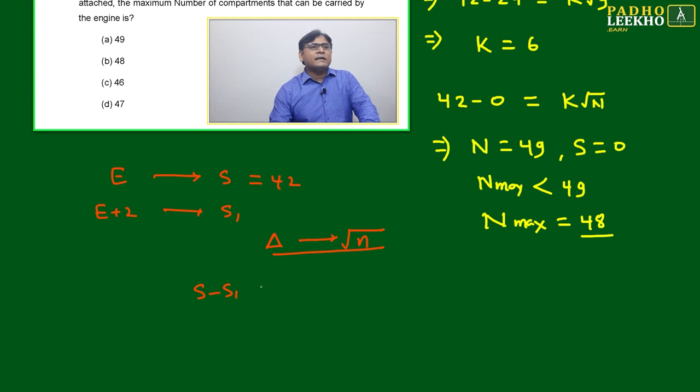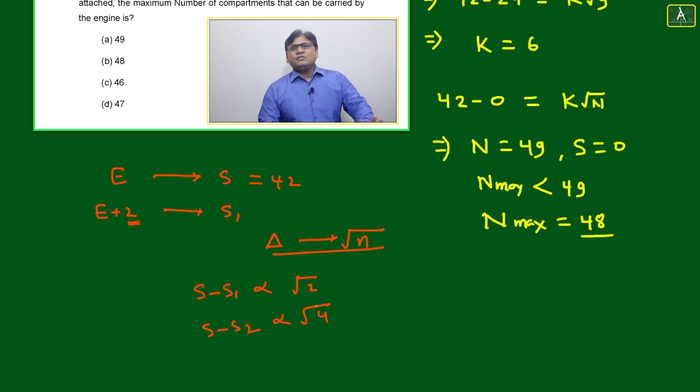That delta will be proportional to the number of bogies. Here, S minus S1 will be directly proportional to root 2 because here two bogies we have added. If four bogies are added, S minus S2 will be directly proportional to root 4.